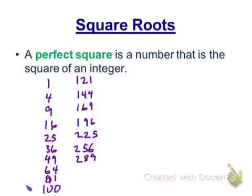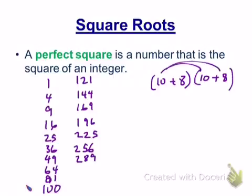What's 18 times 18? That's 100 plus 80 plus 80, that's 260, 260 plus... 18 squared, my mind's not working very well. It's 100 plus 80 plus 80 plus 64, 324.